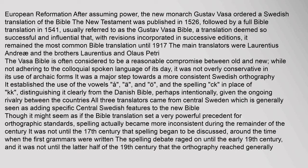It established the use of the vowels Ä, Å, and Ö, and the spelling in place of KK, distinguishing it clearly from the Danish Bible — perhaps intentionally, given the ongoing rivalry between the countries. All three translators came from central Sweden, which is generally seen as adding specific central Swedish features to the new Bible. Though it might seem as if the Bible translation set a very powerful precedent for orthographic standards, spelling actually became more inconsistent during the remainder of the century. It was not until the 17th century that spelling began to be discussed, around the time when the first grammars were written. The spelling debate raged on until the early 19th century, and it was not until the latter half of the 19th century that the orthography reached generally acknowledged standards.